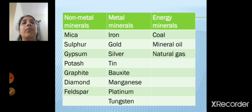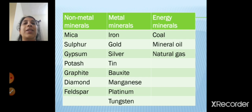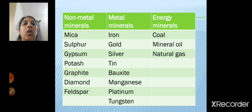There are non-metal minerals, metal minerals and energy minerals. Non-metal minerals include mica, sulfur, gypsum, potash, graphite, diamond, and feldspar. Metal minerals include iron, gold, silver, tin, bauxite, manganese, platinum, and tungsten. Coal, mineral oil, and natural gas are all energy minerals.